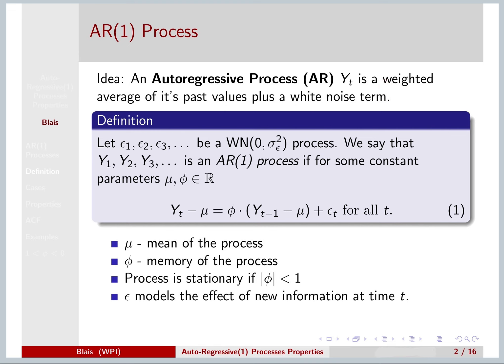Here's our definition. If the epsilon 1, 2, 3 sequence is a white noise with variance sigma epsilon squared, then we say that the sequence Y1, Y2, Y3 is an AR1 process if, for constant parameters mu and phi, this equation 1 holds.